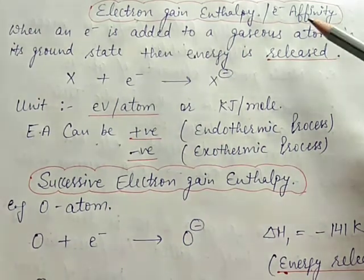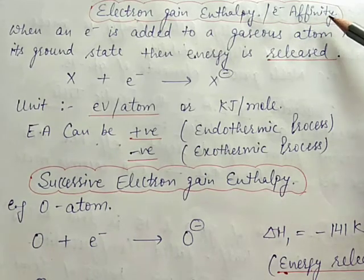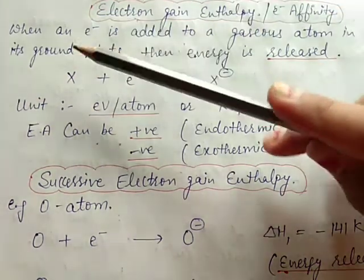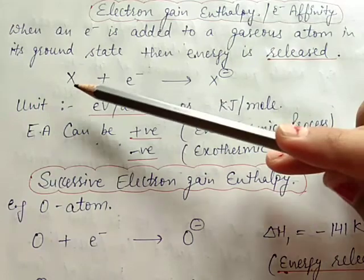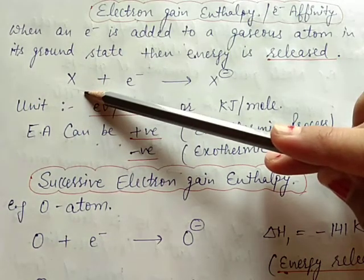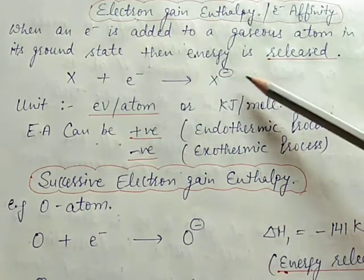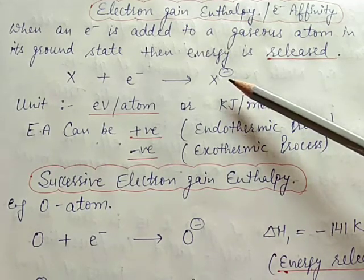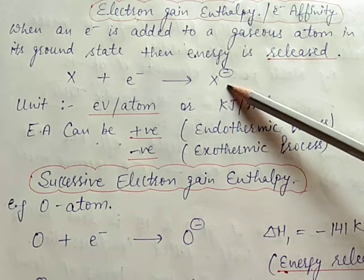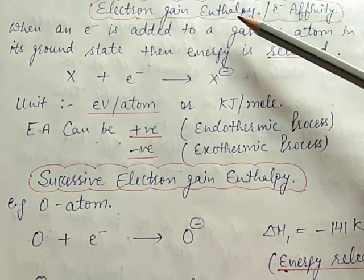Good morning students. Today's topic is electron gain enthalpy or electron affinity. How will you define electron gain enthalpy? When an electron is added to a neutral gaseous atom in its ground state, energy is released and it forms negative ions — anions. This release of energy is called electron gain enthalpy or electron affinity.